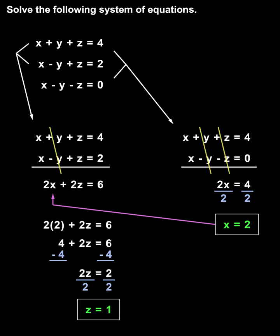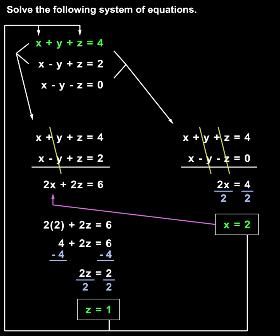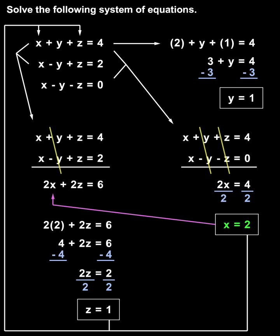So x equals 2 and z equals 1. To find the value of y, we simply plug our values of x and z into any of the equations in the original system. Let's use the first equation: x plus y plus z equals 4. Since x equals 2 and z equals 1, we plug in 2 for x and 1 for z, giving us 2 plus y plus 1 equals 4, or 3 plus y equals 4. Subtracting 3 from both sides, y equals 1.